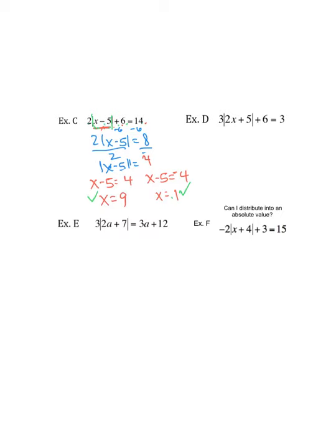I did it a different way. I distributed the 2. Oh! Danny Claypool said, hey, I distributed the 2 into the absolute value. Danny Claypool, that is fine. If you look at example F, it says, can I distribute into the absolute value? I will be addressing that here pretty soon. For now, don't. All right. Cool?